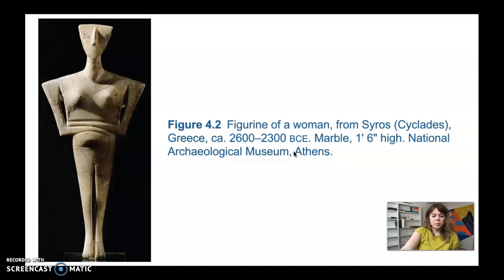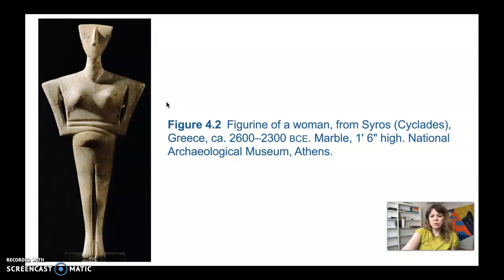A lot of triangular forms are found in this piece: there's a triangle in the head, the body tapers down, and the pubis is also triangular, so there are repeating triangular shapes throughout. The toes are pointed downward, meaning the figurine couldn't stand upright — it had to be laid down on its back, much like the deceased. We don't know exactly what these sculptures represent; they could be fertility figurines, goddesses, or representations of the dead. Paint has been found on these figurines, so they were at least partially painted, probably with bright pigments.